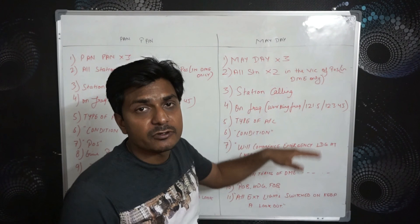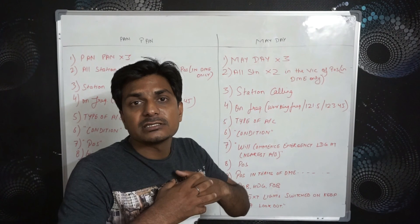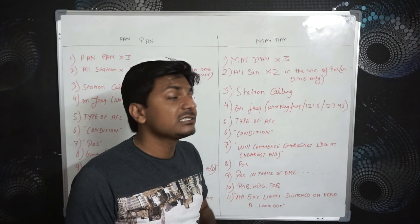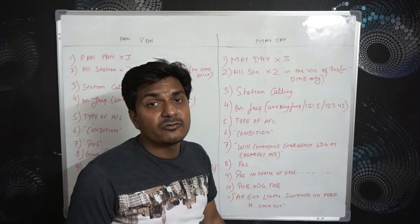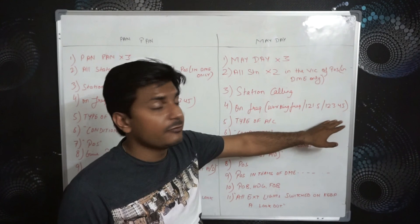One by one, you have to broadcast this message on each frequency. On the working frequency — the area frequency you are flying in. On emergency frequency 121.5, in case ground stations have already tuned into emergency frequency, they can get information about your distress message. And on 123.45, the inter-pilot frequency — if any pilot in the air has switched to or is monitoring this frequency, he can also get information about your distress.